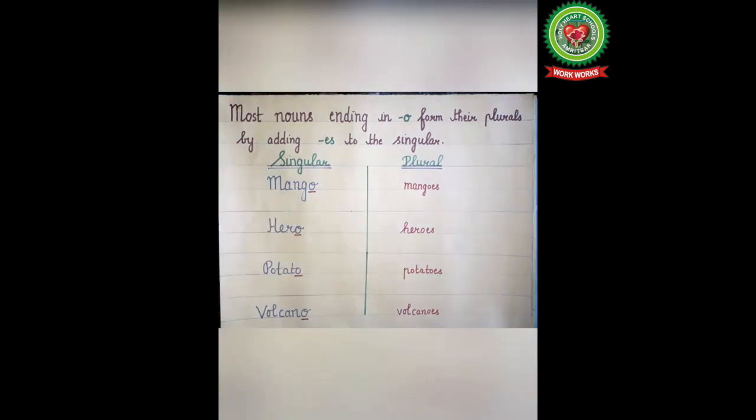Children, now you have seen that nouns ending in O form their plurals by adding ES to the singular noun. Please revise these two rules from your elementary grammar book. Thank you.